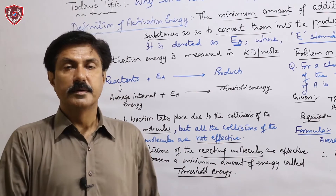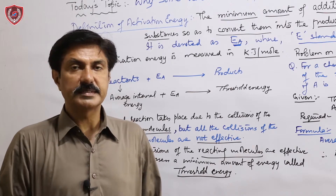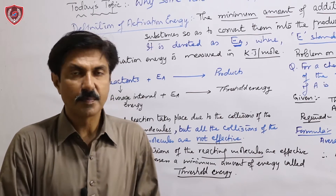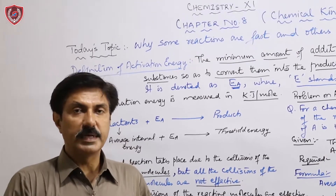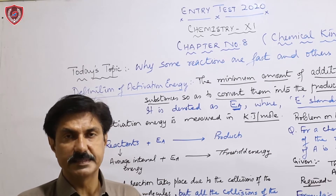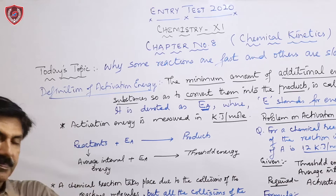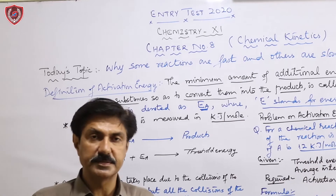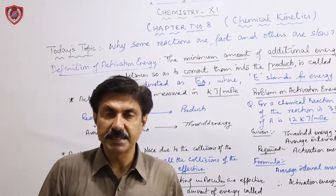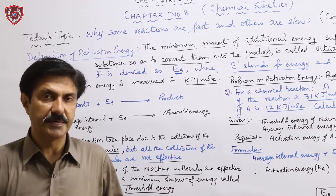Today we have the next lecture from Chapter 8 of the first-year Chemistry syllabus. In the previous lecture on chemical kinetics, we covered types of chemical reactions based on reaction velocity: slow reactions, fast reactions, and moderate reactions.